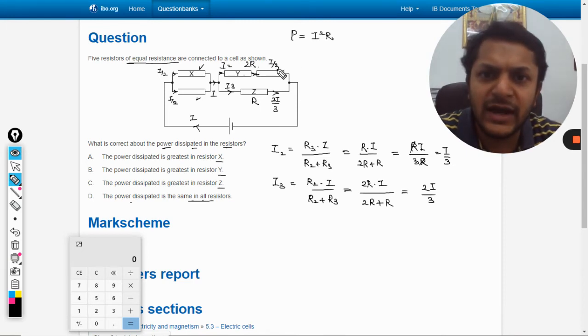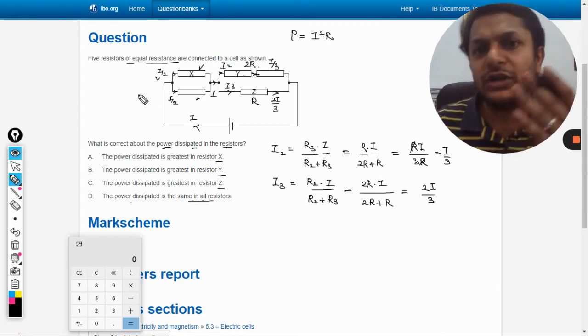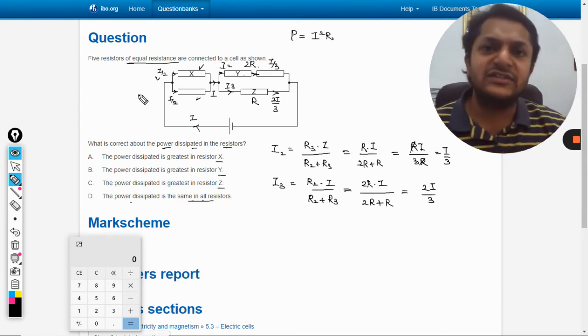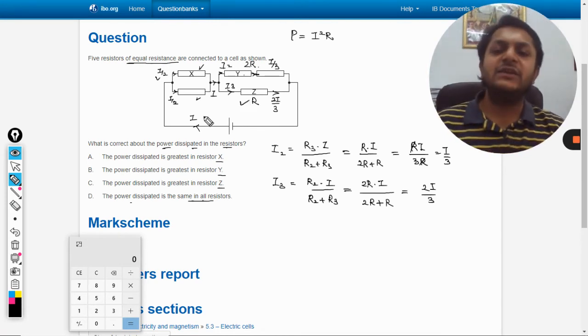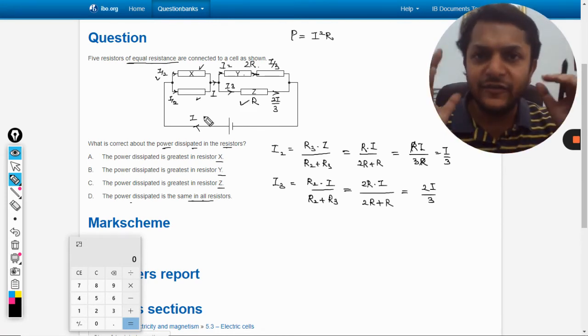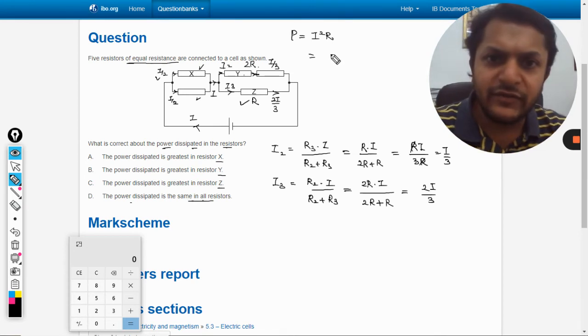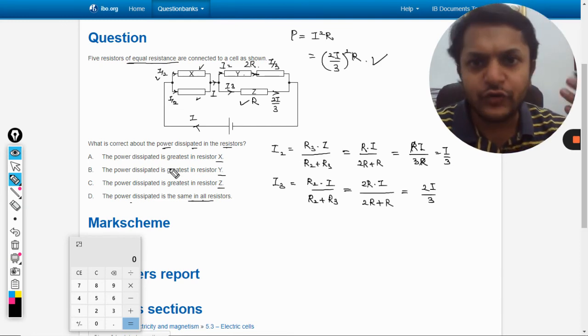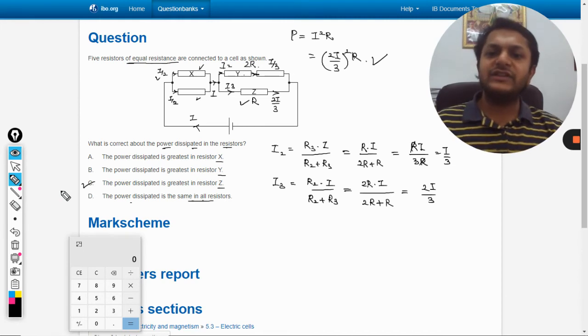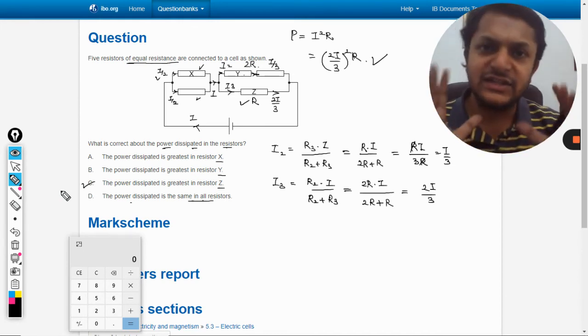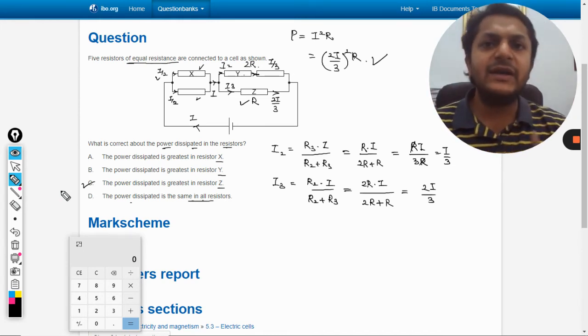One third here and here it is half of the total current. So in which resistor the current is maximum? It is in Z. So definitely the power consumption in Z will be maximum, given by (2i/3)² into R. Anyways, we need not find the maximum power. So our answer should be C, that the power dissipated is greatest in Z.